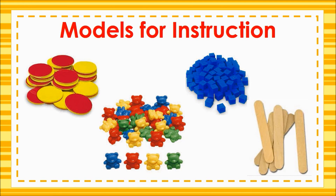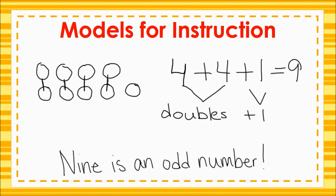Students must begin exploring odd and even numbers with concrete models that they can manipulate. Since students are determining if the individual objects in a set can be paired to illustrate an even number, almost any physical models can be used. Counters, bears, unit cubes, and popsicle sticks are all good models to use since they are familiar and easily manipulated by students. Only after students have demonstrated understanding through grouping objects should they move to pictorial representation of drawing and the abstract representation of writing equations without the use of physical models.